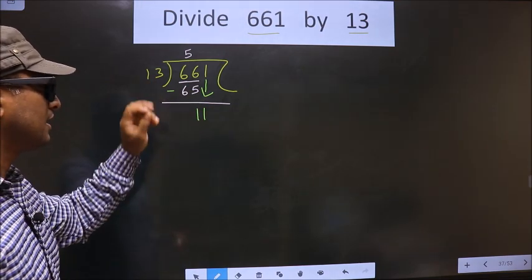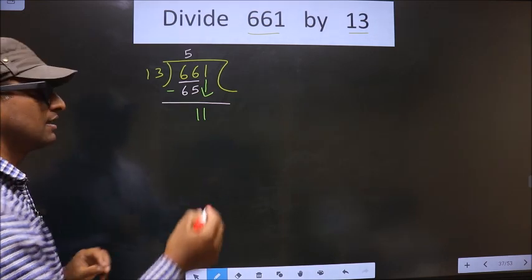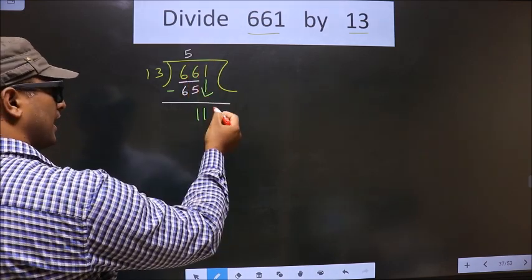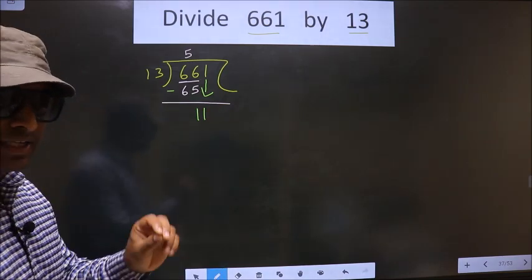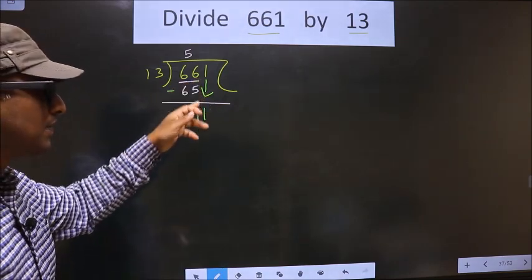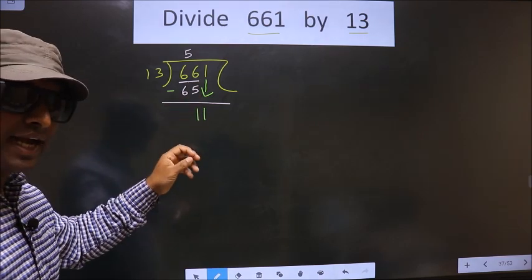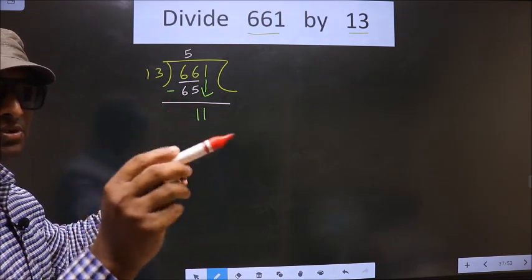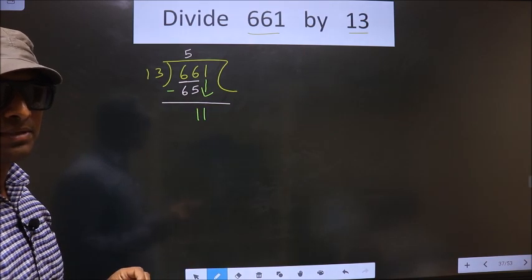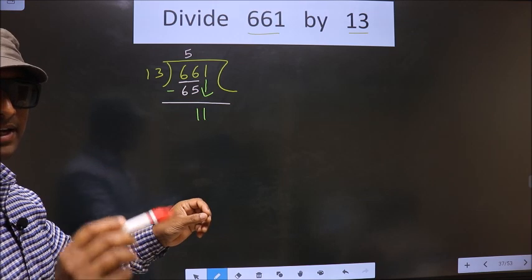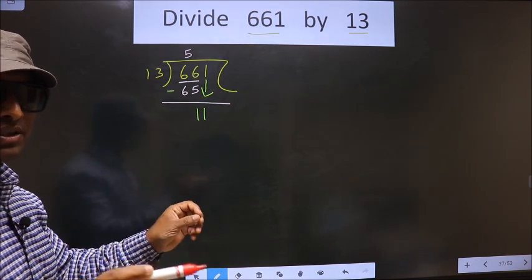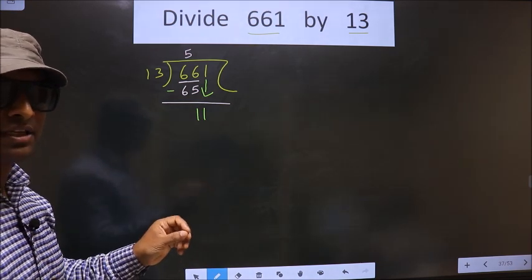So what many do is they put a dot and take 0 here, which is wrong. Just now you brought a number down, and in the same step you cannot put a dot and take 0. I repeat: bringing the number down, putting a dot, and taking 0 both at the same step you should not do.